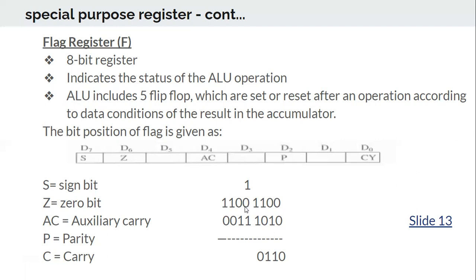If the microprocessor adopts even parity and the result already has an odd number of ones, then P will be set to 1. Conversely, if we are adopting even parity and the number of ones is already even — say four ones — then P will be 0.